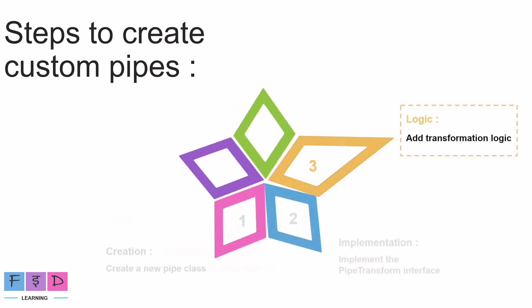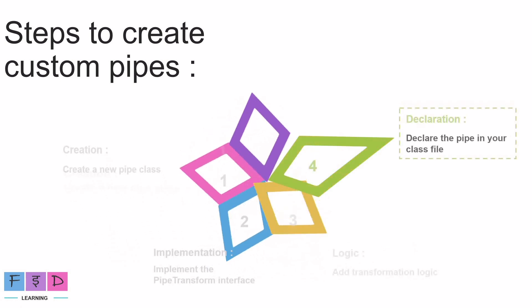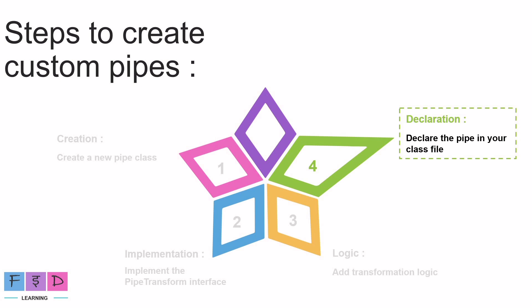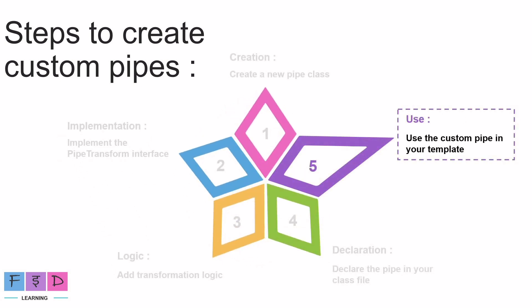The third step is to add transformation logic inside the transform method. These three steps — creation, implementation, and logic — need to be implemented inside the pipe.ts file. The fourth step is declaration, where we import the custom pipe in the component class file where it's needed. And finally, the fifth step is to use the custom pipe in the component template file, just like we would use built-in pipes.